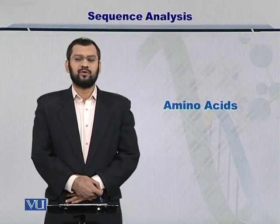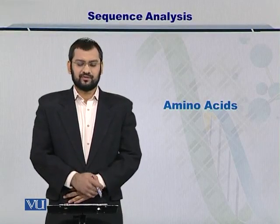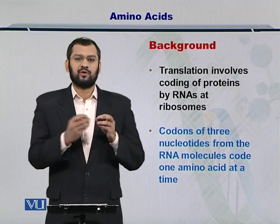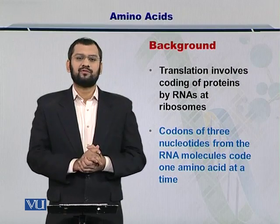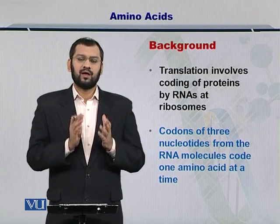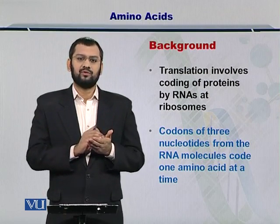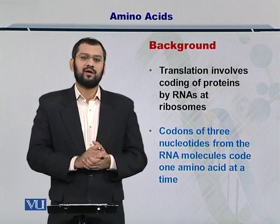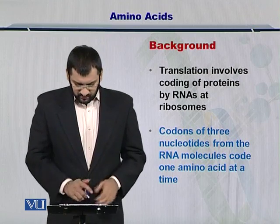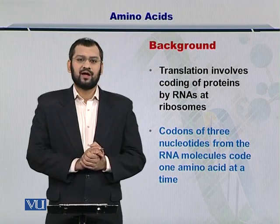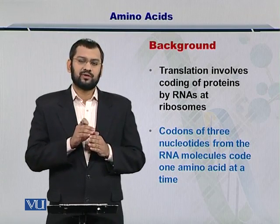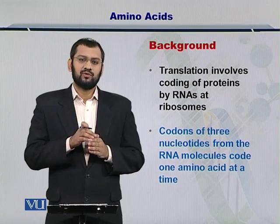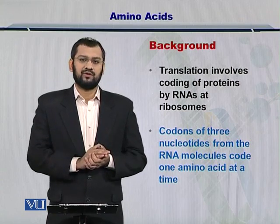Dear students, in this module we are going to talk about amino acids. Amino acids are polymerized together to form proteins in a process called translation. RNA molecules with nucleotides within them dictate how these amino acids will be put together towards formation of a protein. These nucleotides act in nucleotide codons in which three nucleotides are present at a time, so three nucleotides code for one amino acid at a time.